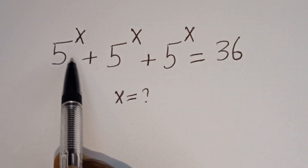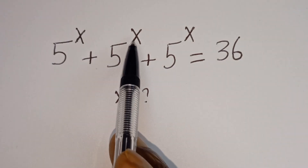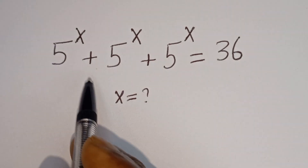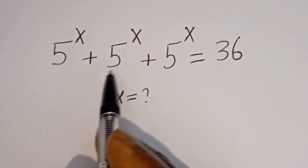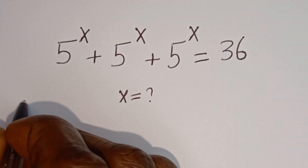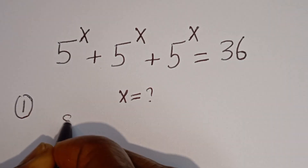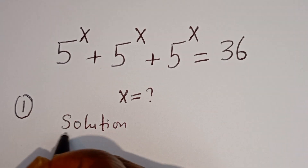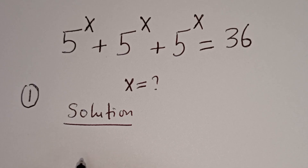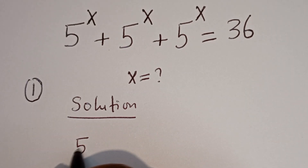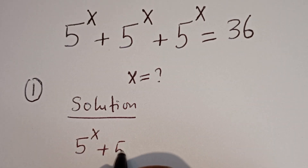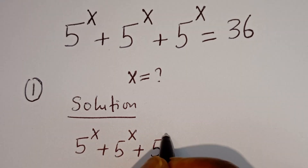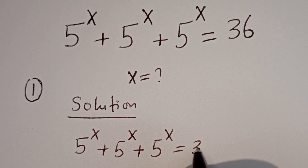Hello. How to solve for X in this equation: 5 to the power of X plus 5 to the power of X plus 5 to the power of X is equal to 36. We're going to solve two different questions here. Let's call this question number one. We have 5 to the power of X plus 5 to the power of X plus 5 to the power of X is equal to 36.